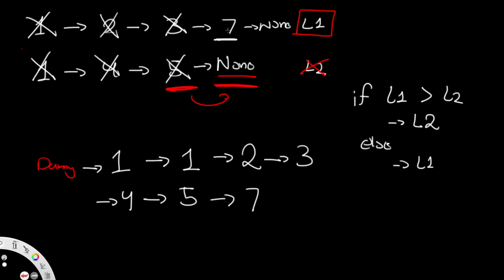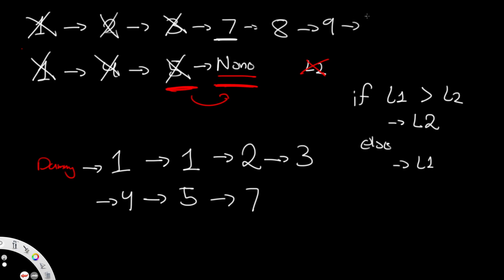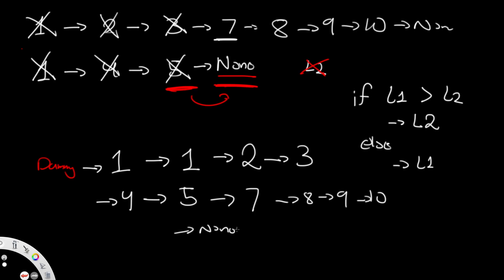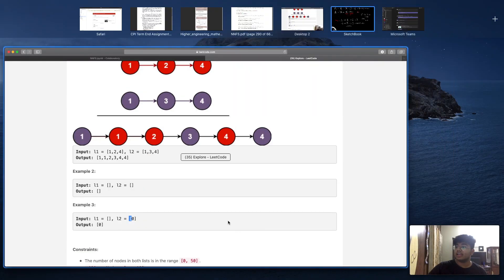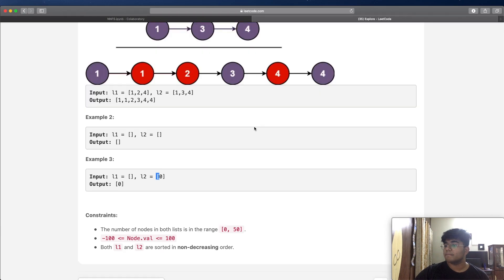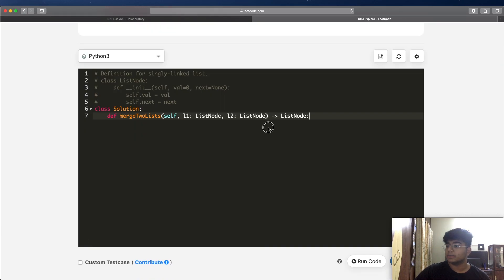To further illustrate: if L1 had continued with 7→8→9→10→none, all of that would be appended. So 5 points to 7, points to 8, points to 9, points to 10, points to none. That is the basic idea — once one linked list is exhausted, we simply attach the remainder of the other list.